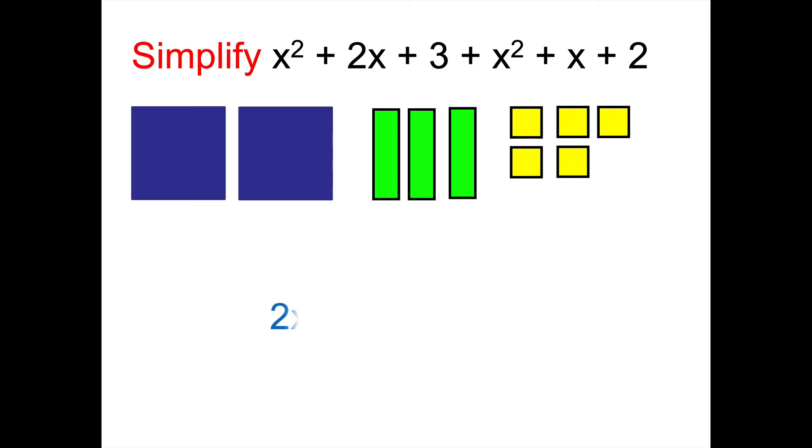How many x squareds have we got? 2. 2x squared. How many x's? 3x. And how many ones? 5. And this would be our answer after we simplify this algebraic expression.